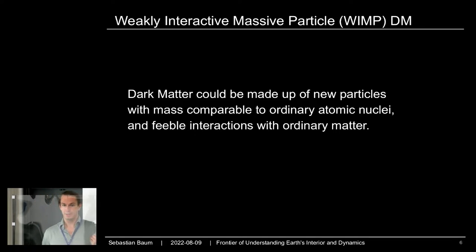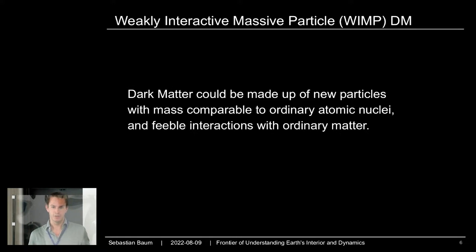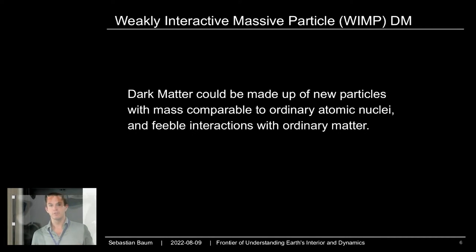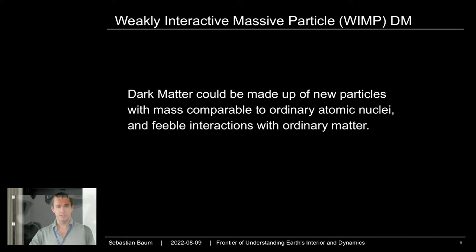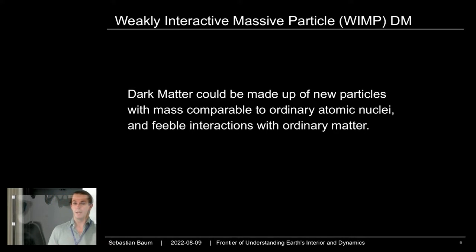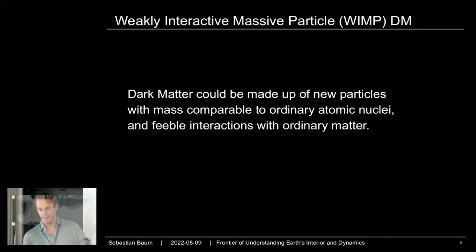If dark matter is made up of WIMPs, then at any given time around us — here on Earth — in a liter-sized volume, there would be roughly one of these particles. They would constantly fly around with speeds on the order of a few hundred kilometers per second. Most of the time, because of these very feeble interactions, they would go right through us — just like neutrinos can fly through the entire Earth without doing anything.